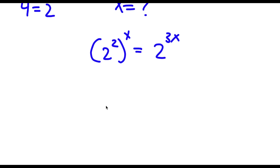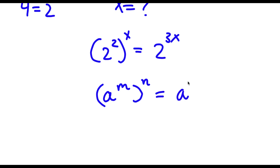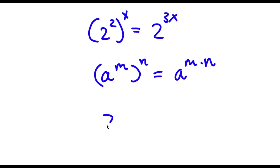Now if I have something in the form a to the power of m to the power of n, this is equal to a to the power of m times n. So 2 to the power of 2 to the power of x is going to be equal to 2 to the power of 2 times x, which is the same thing as 2x. Now this is equal to 2 to the power of 3x.